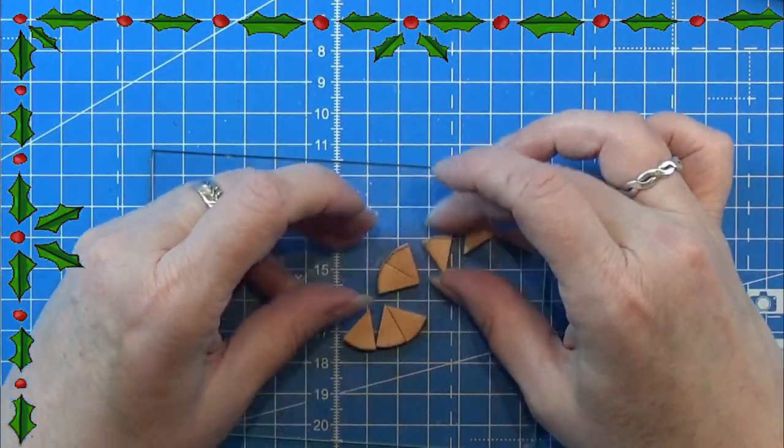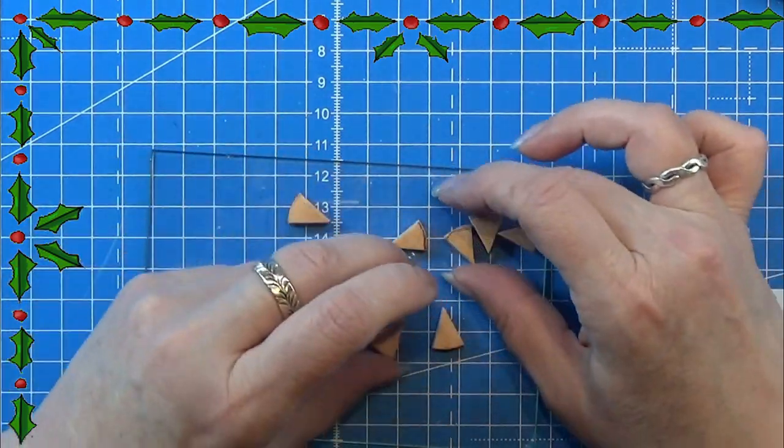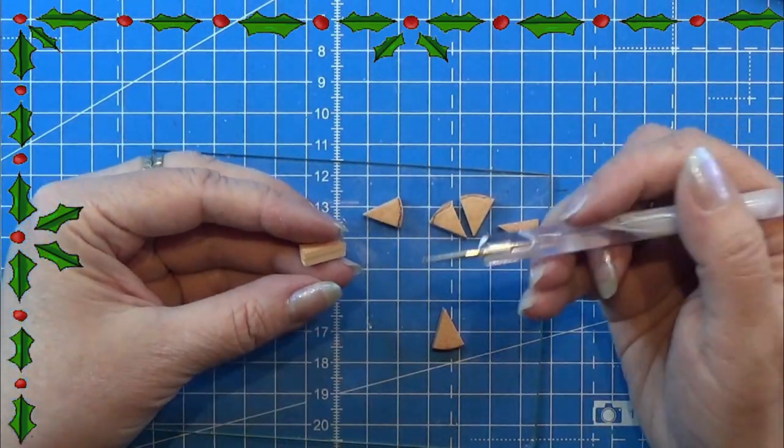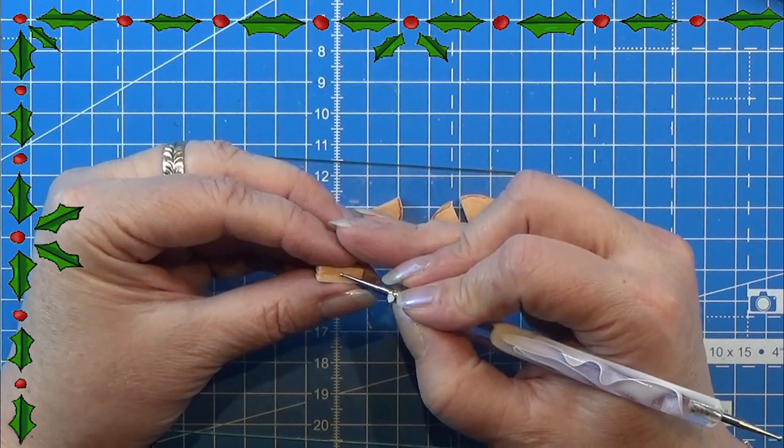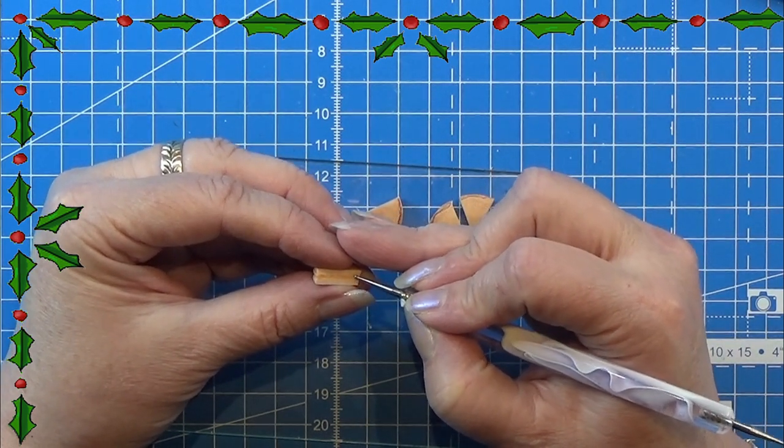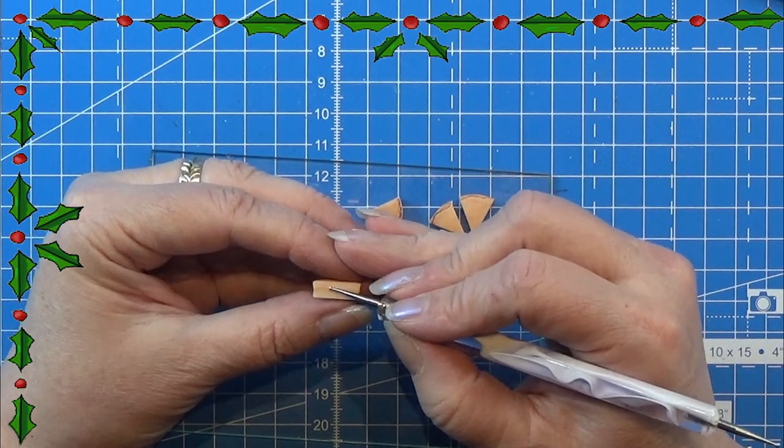Then I take my cake pieces and take them apart here, and I am going to use my dotting tool for the filling in the cake and I am going to use my needle tool to scratch up the cakes.